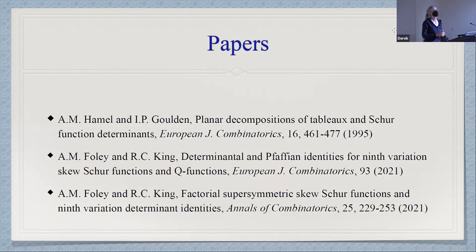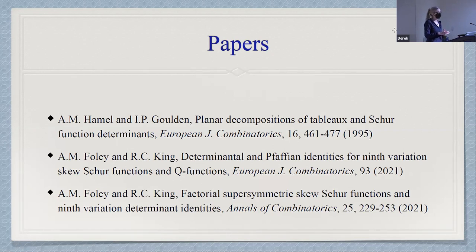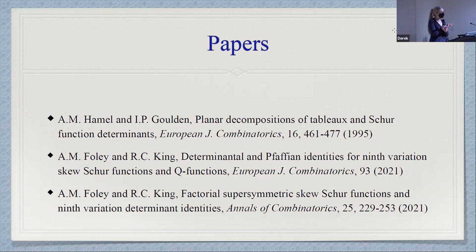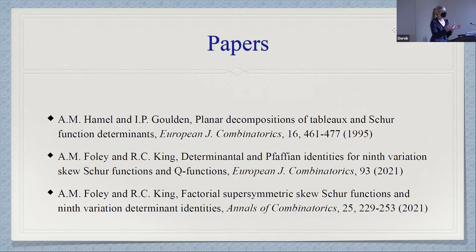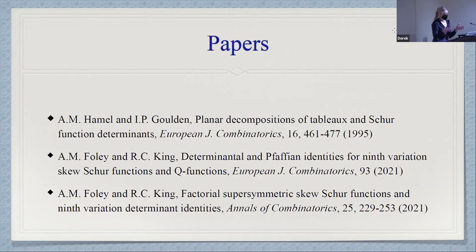The question was: are there versions for shifted shapes, like for Q functions? Yes — way back when my name was still Hamel, I do have a paper on Pfaffians for the shifted ones, and that was actually in my thesis too. Stembridge's paper that I mentioned gives nice ways of setting things up for Pfaffians as well. So the outside decomposition and so on will give you Q function Pfaffians and some determinants as well. Ron and I do have Pfaffian identities for the ninth variation ones.